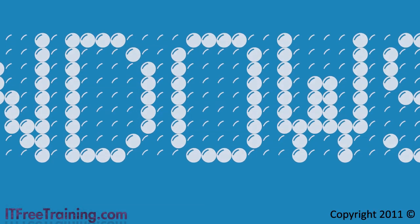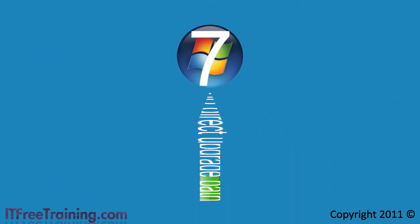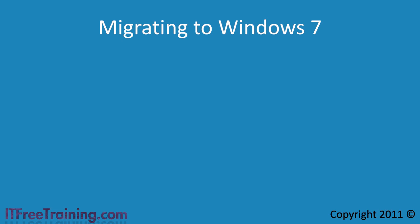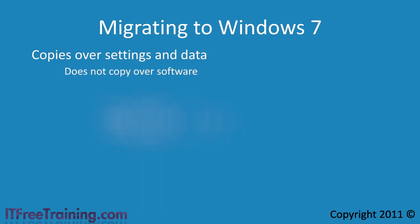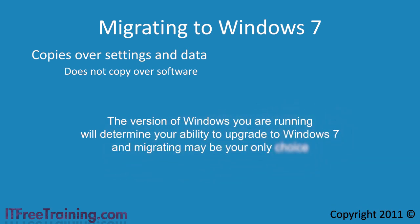Welcome back to your free training course on Windows 7. In some cases you may want to upgrade to Windows 7 but there will be no direct upgrade path. When this happens you can perform a migration to Windows 7. When you perform a migration you copy over settings and documents, however after the migration you are going to have to reinstall all your applications. The version of Windows you are running will determine your ability to upgrade, and migrating may be your only choice.